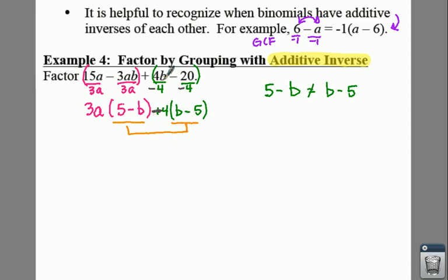If we take out a negative 4 instead of a positive 4, that's going to change this: 4b divided by negative 4 is negative b, and negative 20 divided by negative 4 is positive 5. So we would have 3a times 5 minus b, and we have negative 4 out here. Instead of writing negative b plus 5, we could rearrange those terms and write it as 5 minus b. Are your two terms the same? Yes.